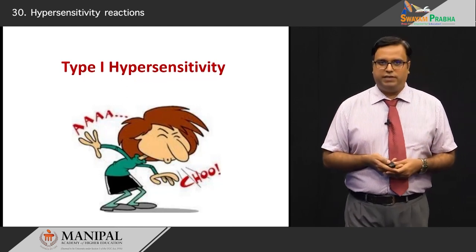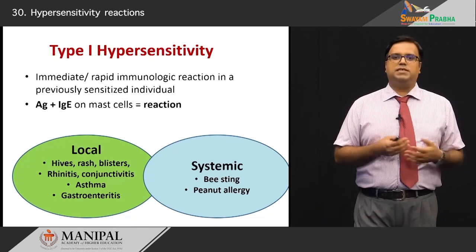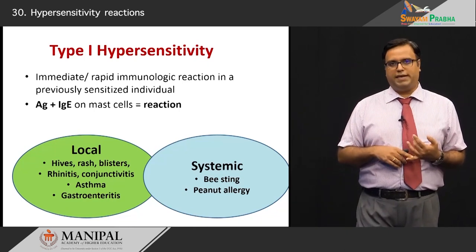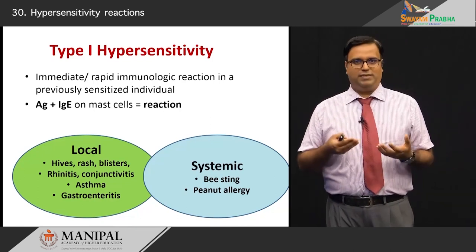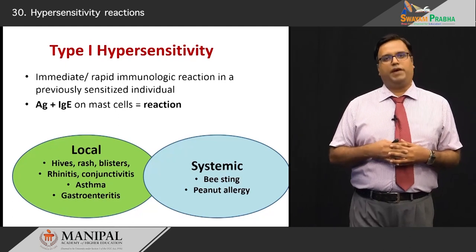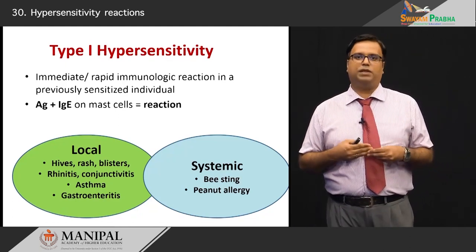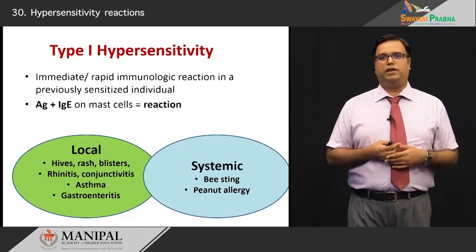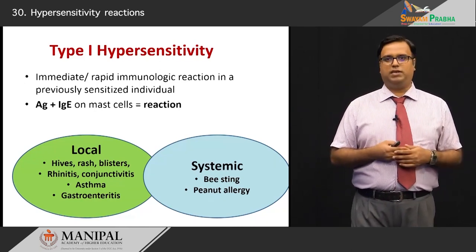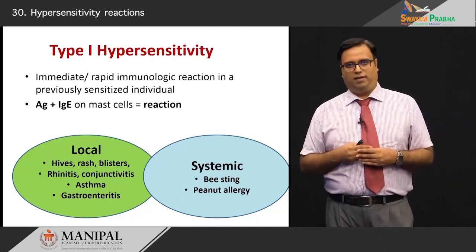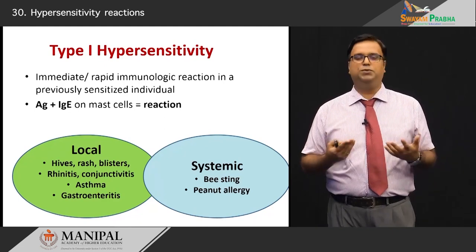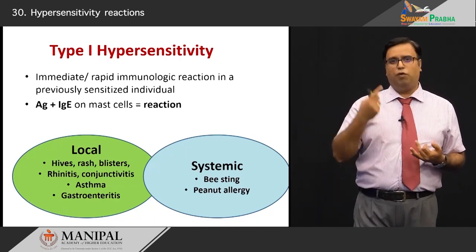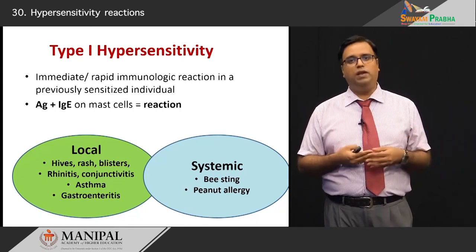Turning to type 1 reaction in more detail: it is a rapid immunological response in a previously sensitized individual — that is an important facet. It is a binding of antigen to IgE on mast cells, which then portends a particular reaction. Common examples include rhinitis from fungal spores, conjunctivitis from pollen or dust, hives, urticaria, and bronchial asthma where the bronchospasm response is triggered by this IgE mediated pathway.